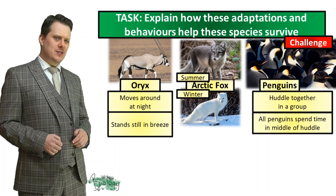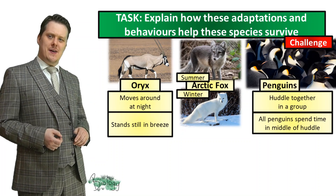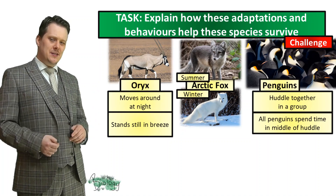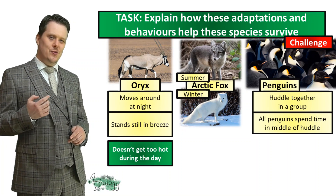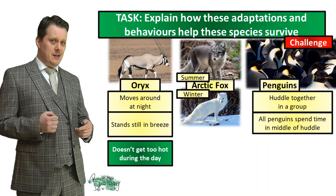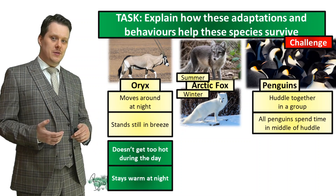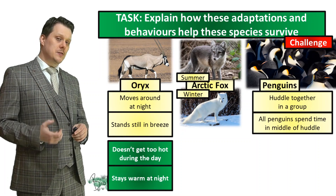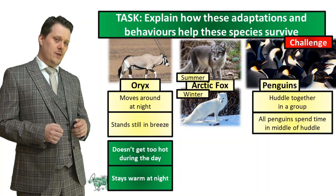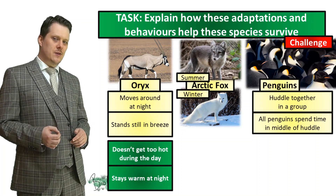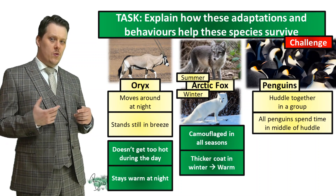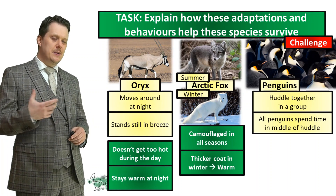Have you explained your adaptations? Let's start with our oryx, who likes to move around at night and stand still in a breeze. Not moving around during the day and standing still in the breeze is going to make sure he doesn't get too hot during the day, and doing his movement during the night time is going to help our oryx stay warm. Our arctic fox has a dark, thin coat during the summer and a really thick white coat during the winter. This allows it to stay camouflaged in all seasons, and it helps it stay warm in the winter as well as keeping cool in the summer.